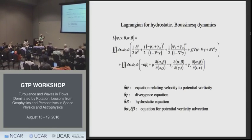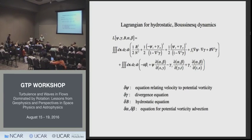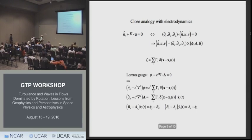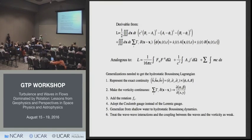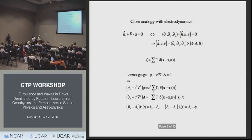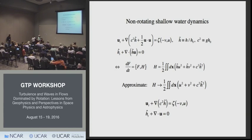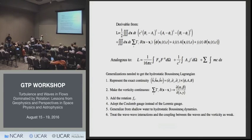During the Q&A, a questioner asks about item six on the final slide — treating wave-wave interactions — noting that this is not to get the Lagrangian, but to get from the Lagrangian to the hydrostatic Boussinesq Lagrangian. The Lagrangian shown is equivalent to the simplified shallow water dynamics, and the speaker clarifies that the steps on the list are about getting to the full hydrostatic Boussinesq result.